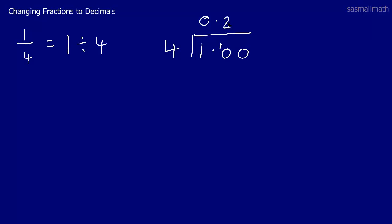2 4s are 8. 8 from 10 leaves us 2. Put the 2 there. 4 divided into 20 goes exactly 5 times. And as it goes exactly we stop there.